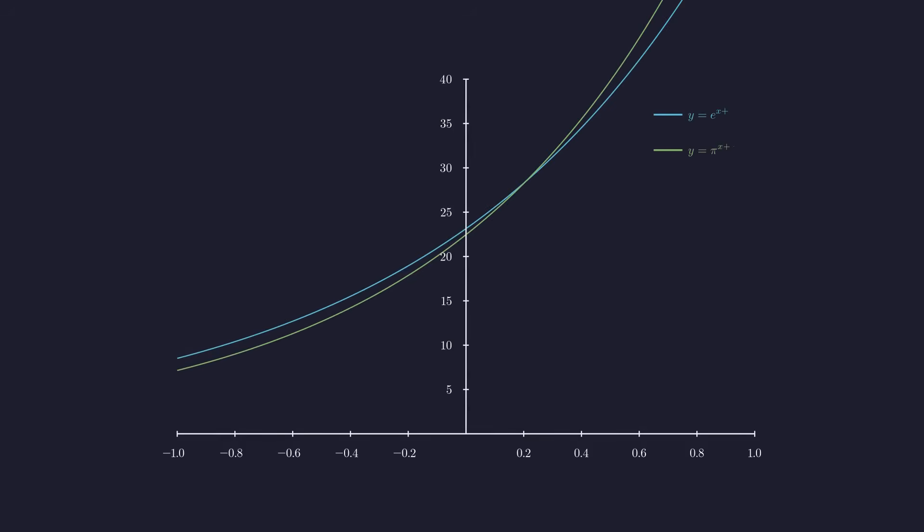In blue, we have y equals e to the power of x plus pi. In green, we have y equals pi to the power of x plus e. The graphs intersect at exactly one point, visually confirming the unique solution we proved algebraically.